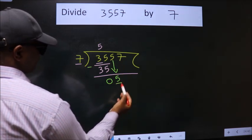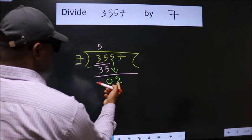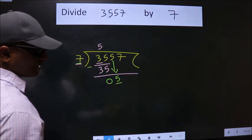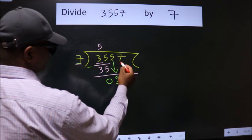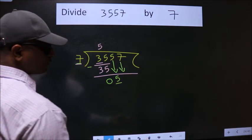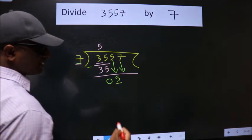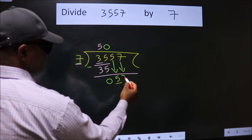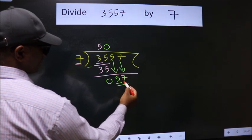Here we have 5, here 7. 5 is smaller than 7. So, we should bring down the second number. And the rule to bring down second number is put 0 here. Then only we can bring down this number. So, 57.